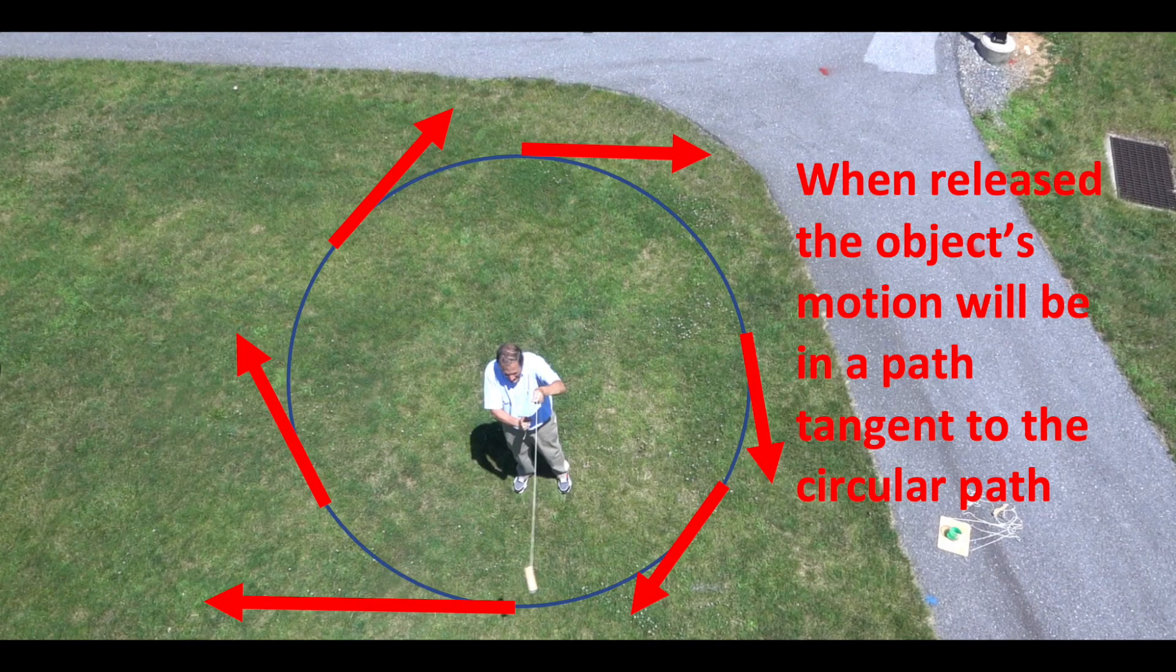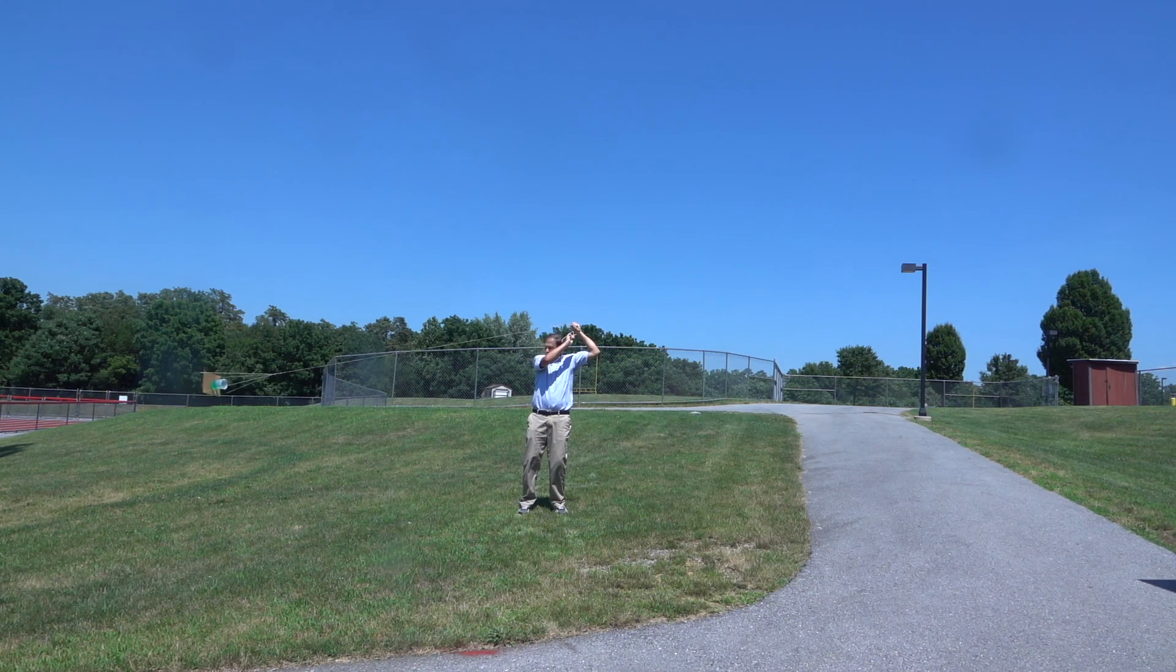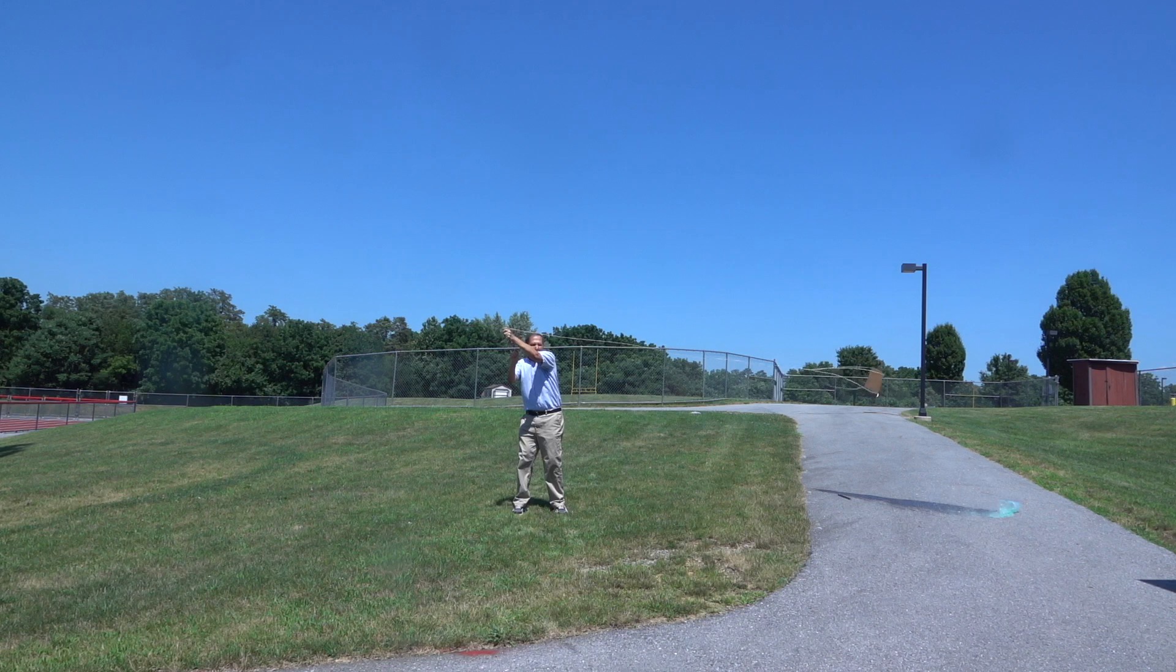Without a centripetal force, the path of an object is going to be in a straight line. Notice the path of the water when the cup falls off of the tray.